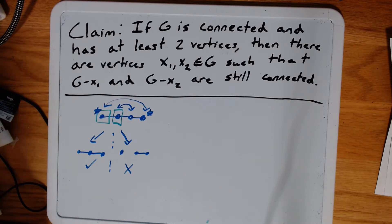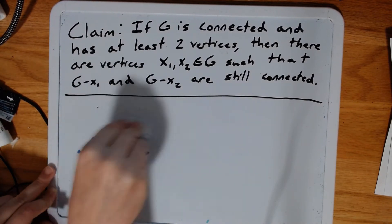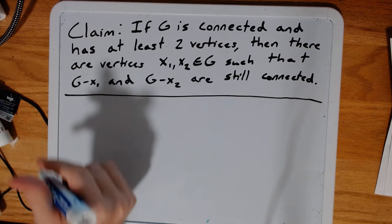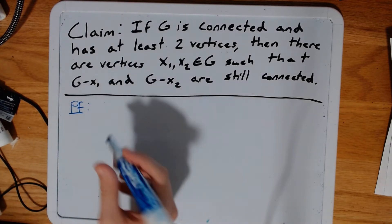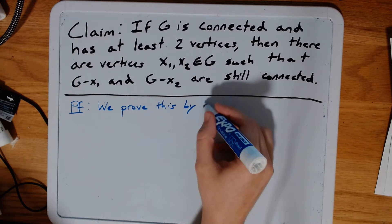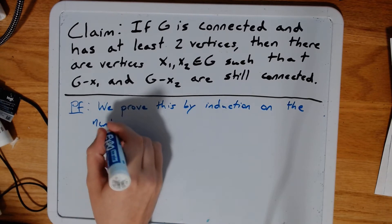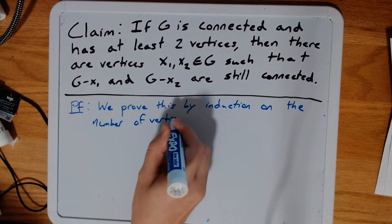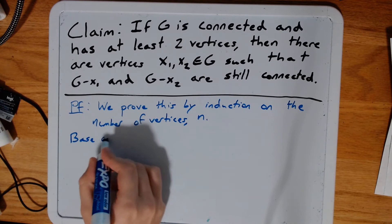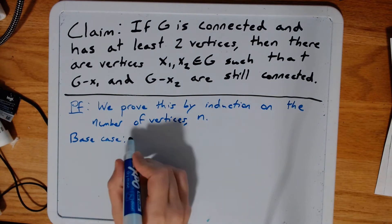So here is how we prove it. We're going to use induction — in particular, strong induction. When we get to the part where that matters, we'll talk about it a little more. We'll prove this by induction on the number of vertices, and we'll give that number a name: N. Our base case — N is going to be as small as possible. Our claim is true for graphs of at least two vertices, so our base case is N equals two.